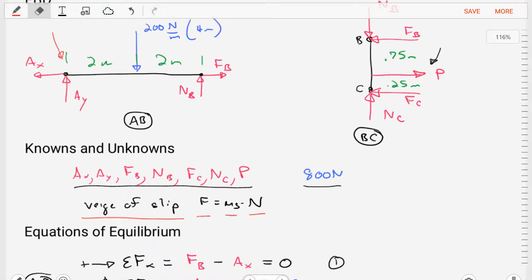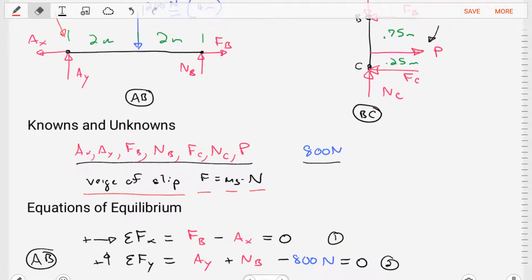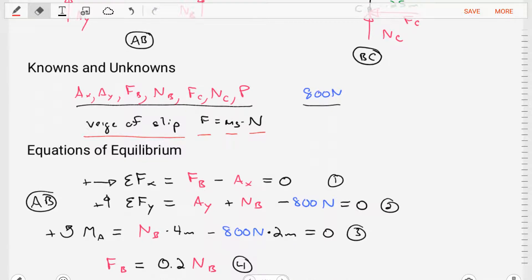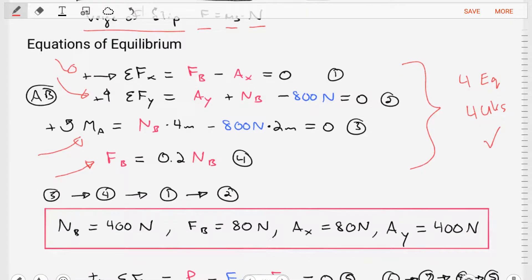So now that we've got this problem set up with free body diagrams, we've got our extra equation identified. Let's craft equations of equilibrium. For member AB, we're going to sum the forces in the x direction, y direction, and we're going to sum the moments about point A. And when we do that, we can also add our impending motion equation for FB, the force of friction at B. Looking at this, we now have four equations and four unknowns. So we're set up to solve this problem.